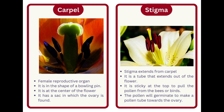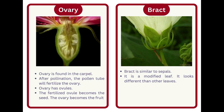The pollen will germinate to make a pollen tube towards the ovary. Ovary. The ovary is found in the carpel. After pollination, the pollen tube will fertilize the ovary. The ovary has ovules. The fertilized ovule becomes the seed and the ovary becomes the fruit. Bract. Bract is similar to sepals. It is a modified leaf that looks different from other leaves.